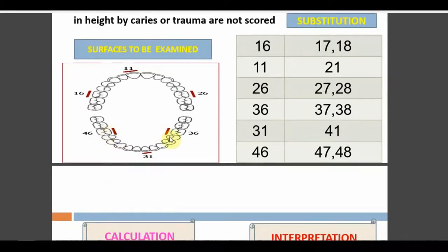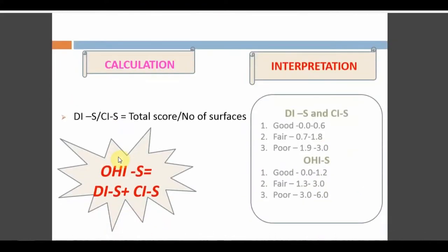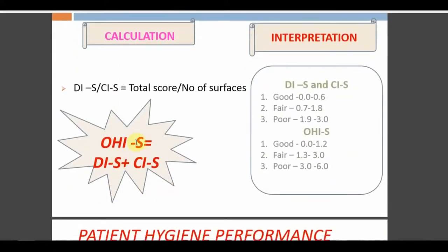Teeth 36 and 46 are assessed on the lingual surface because there is saliva pooling in that area from the submandibular and sublingual glands; the parotid gland drains near the upper first molar. These are naturally cleaner areas, so if they are not clean, it reflects the patient's poor oral hygiene attitude. Assessing these sites tells us about the patient's oral hygiene behavior.